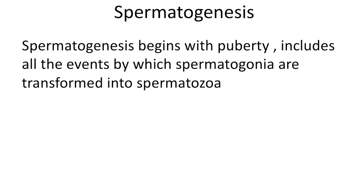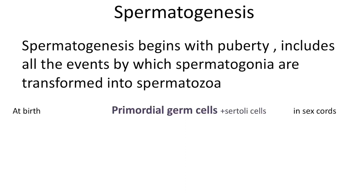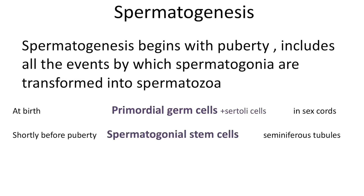Let's start from the very beginning, which is the primordial germ cell level. At birth, the germ cells in the male infant are present in the sex cords of the testis along with the supporting Sertoli cells. Shortly before puberty, the primordial germ cells give rise to spermatogonial stem cells, and the sex cords acquire a lumen and become seminiferous tubules.